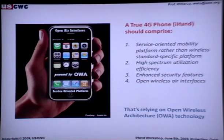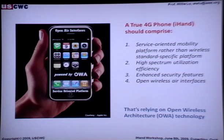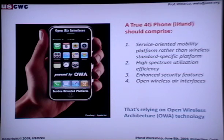The second issue is high spectrum utilization efficiency. Spectrum efficiency is most important in the mobile phone. In the future we have to converge multiple standards in one platform, one device. We have to use the spectrum dynamically and wisely, and we have to share the spectrum. In order to share the spectrum, we have to make sure the system and transmission architecture is open. Otherwise, if the architecture is closed, then the performance is very low.